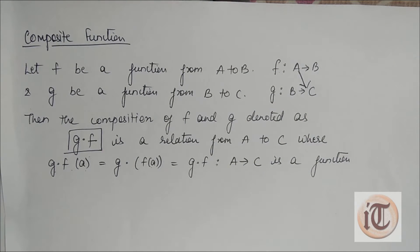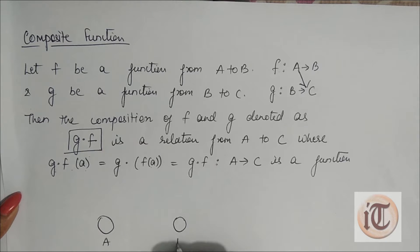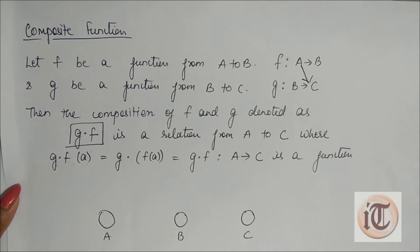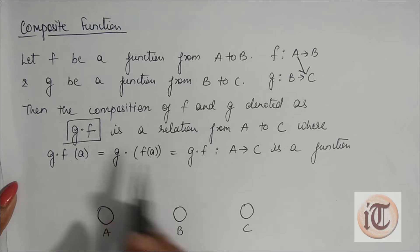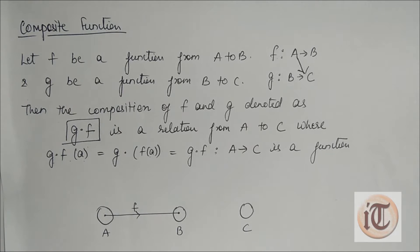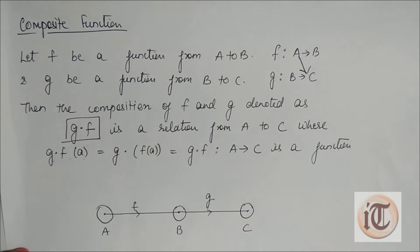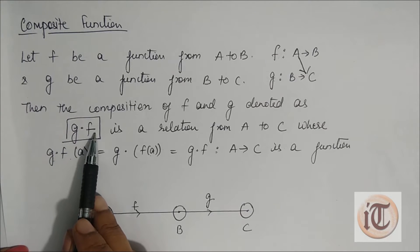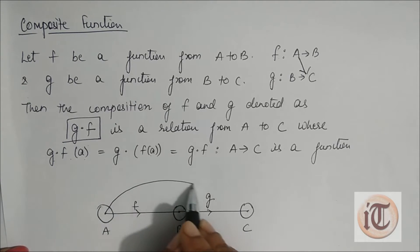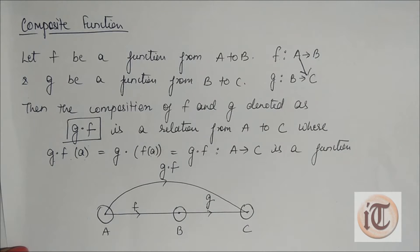If we want to understand the concept of composite function with the help of a diagram, suppose we have set A, set B, and set C. f is a function from A to B, and g is a function from B to C. If we calculate g dot f — that is the composition of f and g — g dot f is a function from A to C.